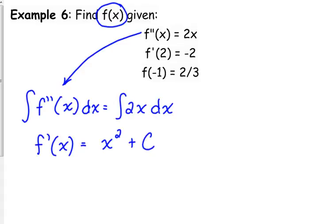Now, yes, we are trying to get to the original. However, we've got to find that C first. We've got to find out what that C is first. So, guess what? They tell us that the derivative, when x is 2, is equal to negative 2. So let's plug that in.